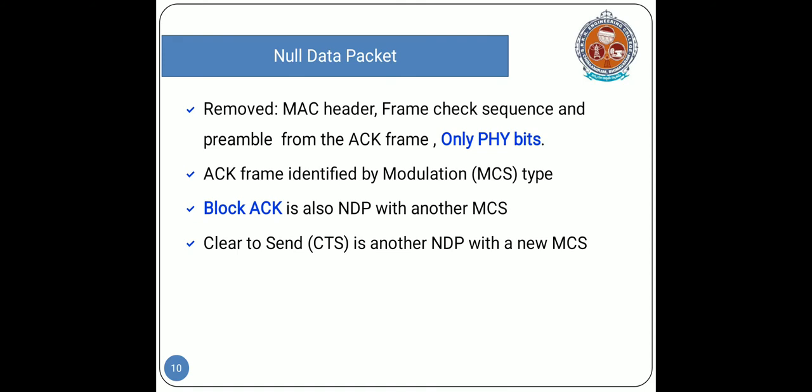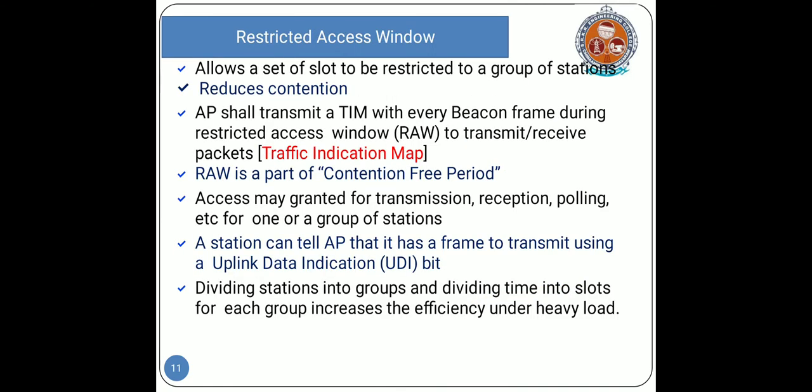With null data packets, only physical bits are used. Acknowledgement frames are identified by modulation coding scheme, and block acknowledgement is supported for null data packets with other modulation coding schemes. Clear-to-send is another null data packet with a new modulation coding scheme. The Restricted Access Window (RAW) is a control algorithm that avoids simultaneous transmissions when many devices are present, provides fair access to the wireless network, offers additional power savings for battery-powered devices, and reduces collisions.